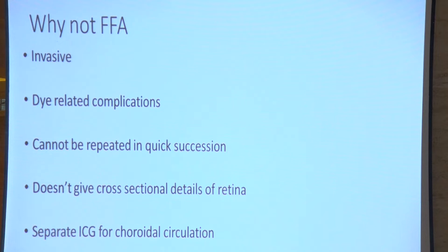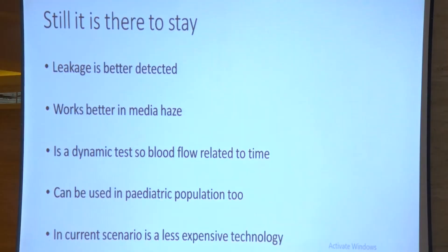OCT was the only tool providing in vivo pathological sections — you can actually see the layers of the retina — while FFA is a two-dimensional picture; the third dimension is not included, which is present in OCT. Also, you need a separate dye and separate filters for visualizing choroidal circulation.